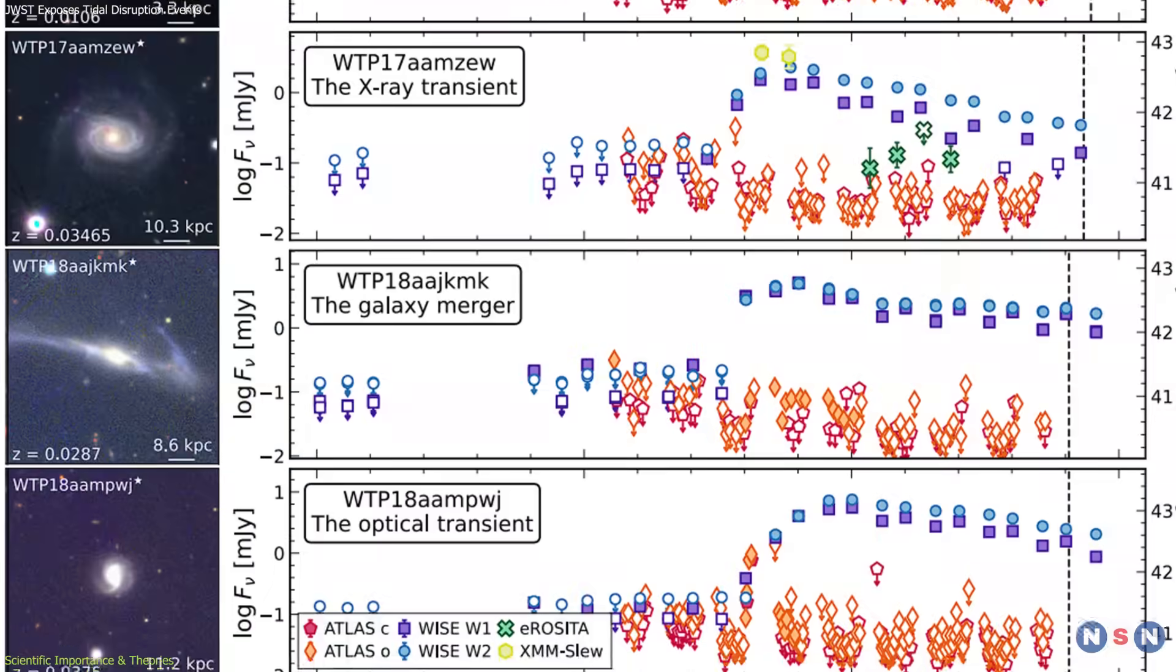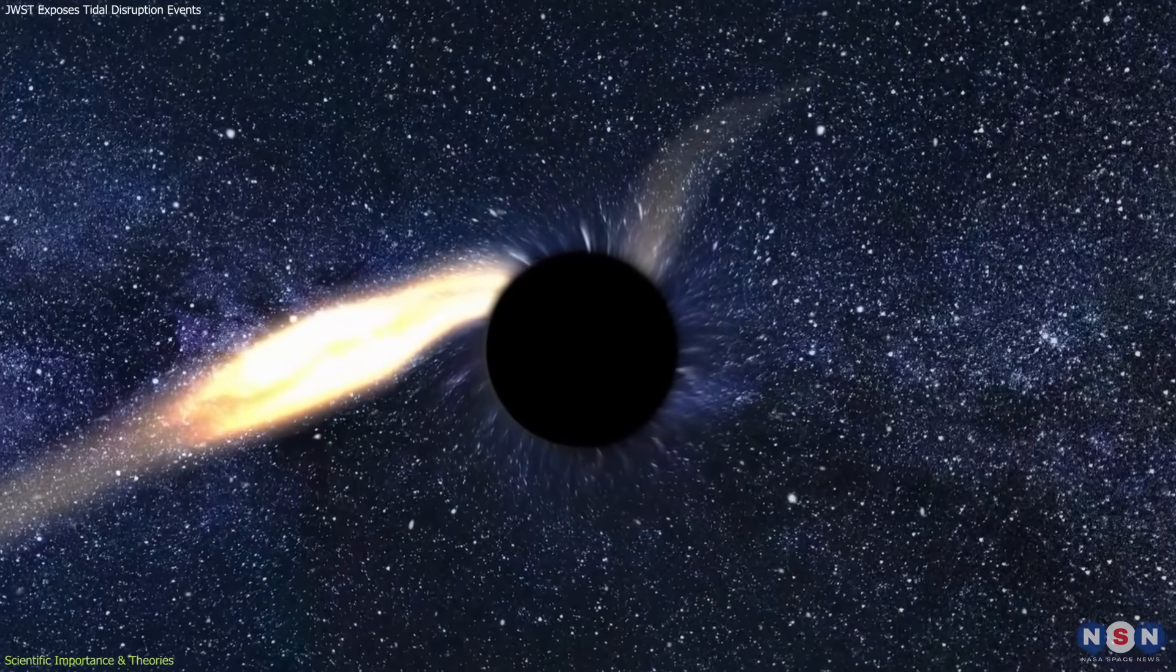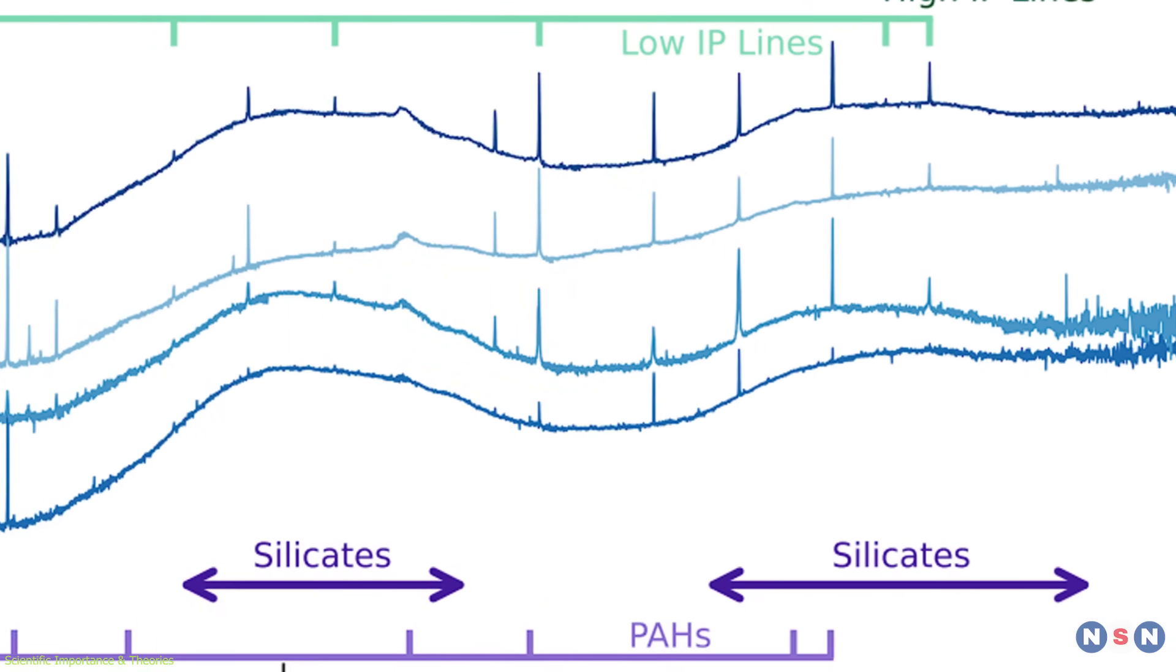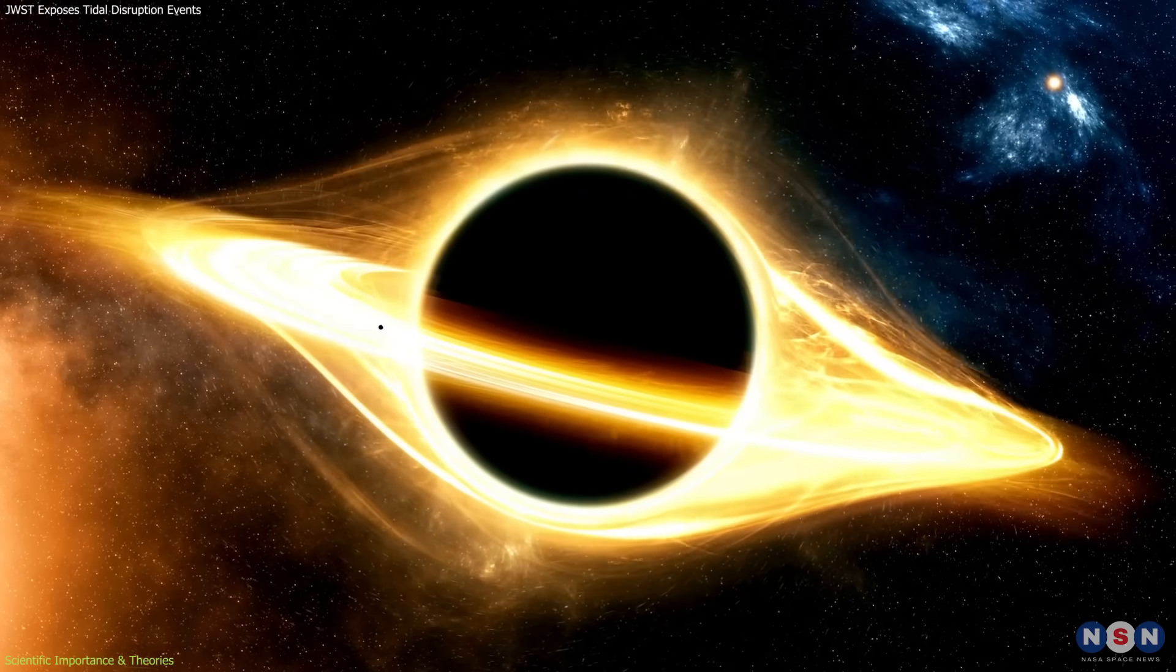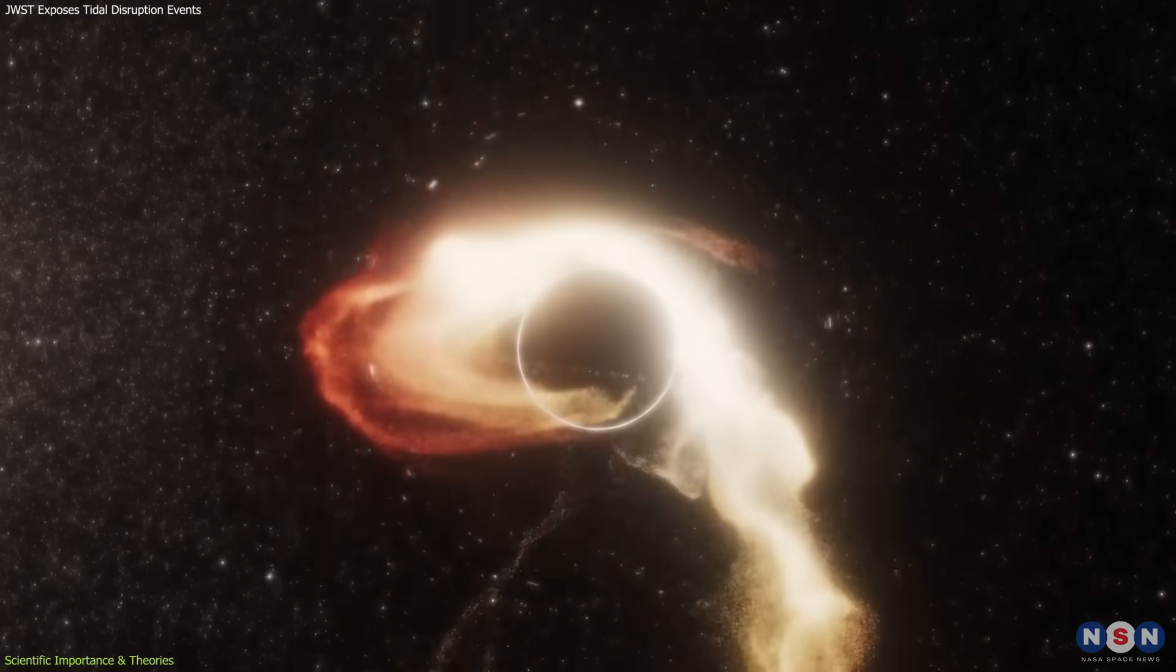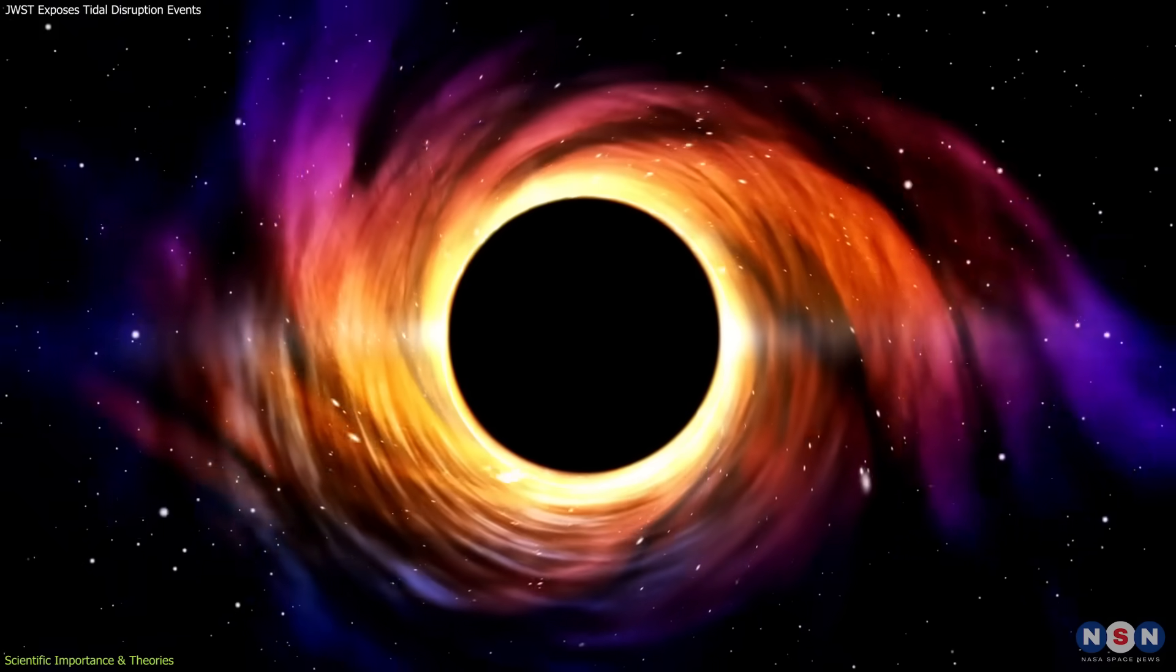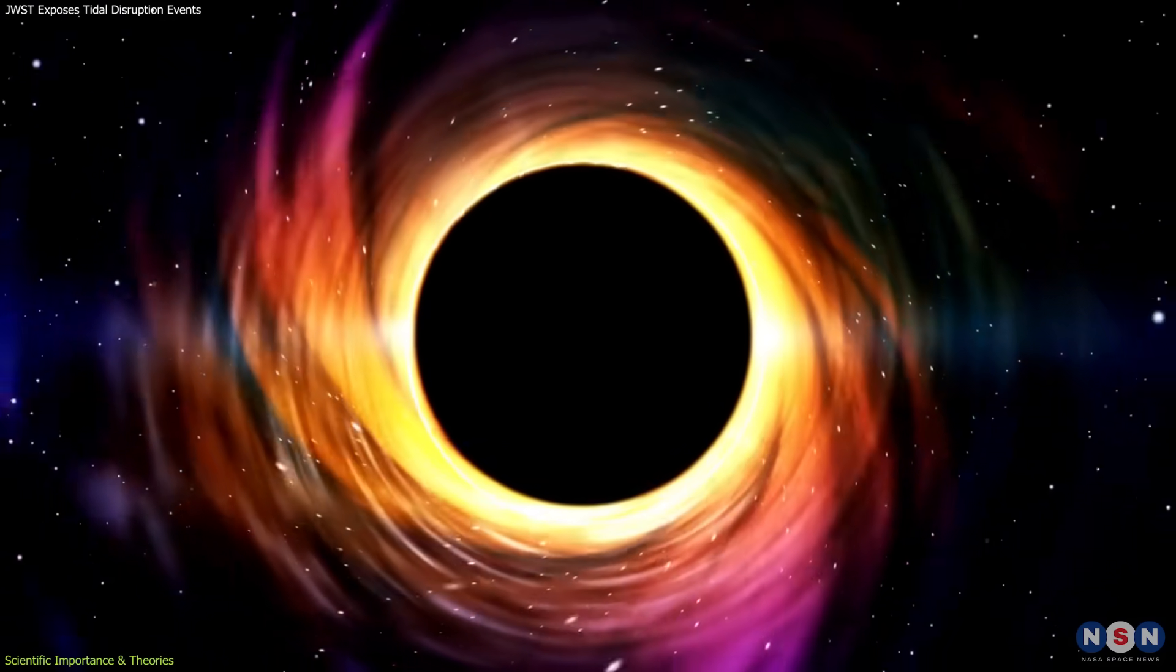Beyond classification, these detections sharpen our understanding of how black holes interact with their environment. By analyzing the energy and timing of the infrared signals, astronomers can infer black hole properties such as mass and spin. A star torn apart by a larger black hole, for example, may produce debris that falls in more slowly, while a rapidly spinning black hole might accelerate the process and emit stronger radiation.